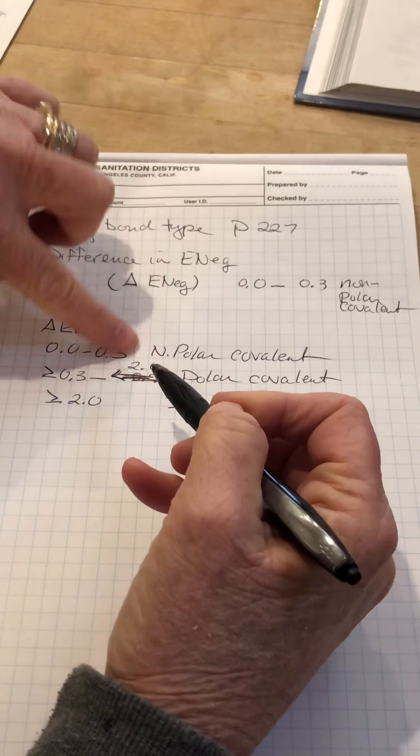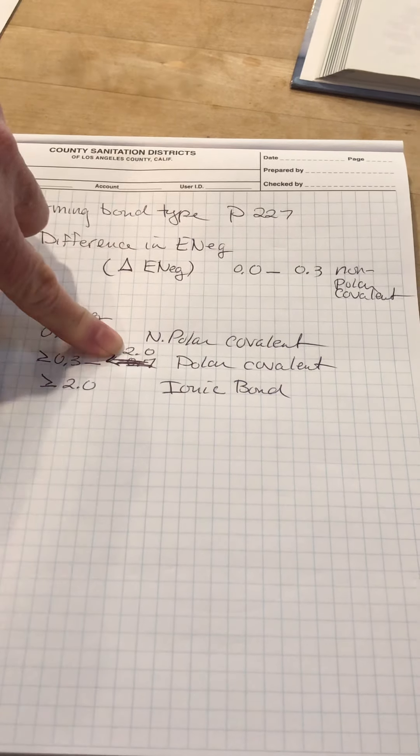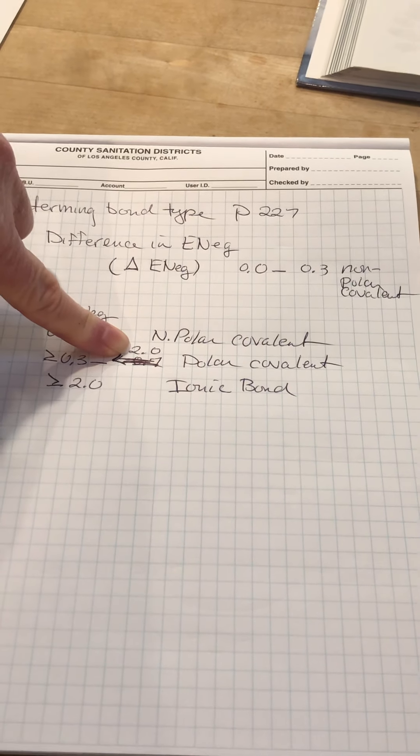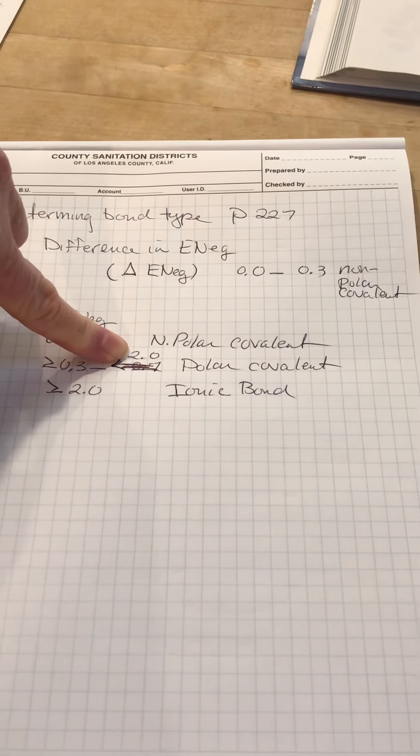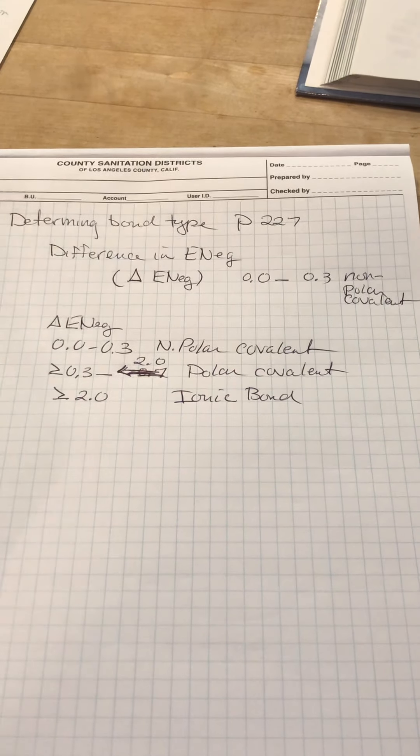Some books will give you 1.7 as this value. Your book gives you 2.0, which is probably better. If you do hydrogen and fluorine, which is a gas, and you use 1.7, it turns out to be ionic. So we're going to stick with 2.0.